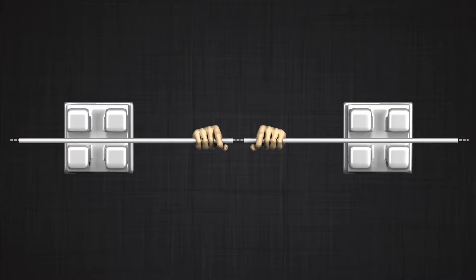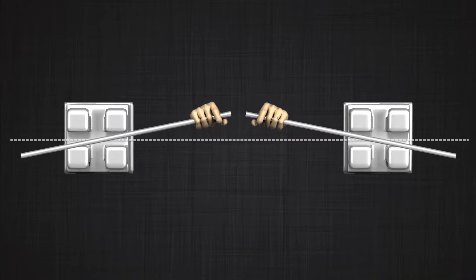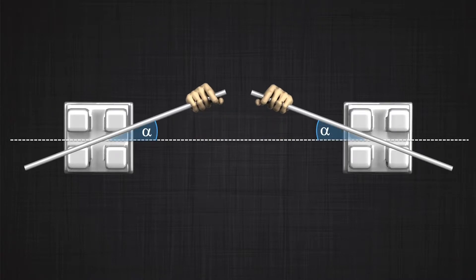To understand what happens when we engage a wire in two brackets, we used an analogy. If we put a wire inside the bracket and lift our hand, an angle of activation appears between the wire and the bracket, and that produces a couple, which appears as a moment on the tooth. The closer our hand was to the bracket when lifting, the bigger the moment; the farther away, the smaller the moment.